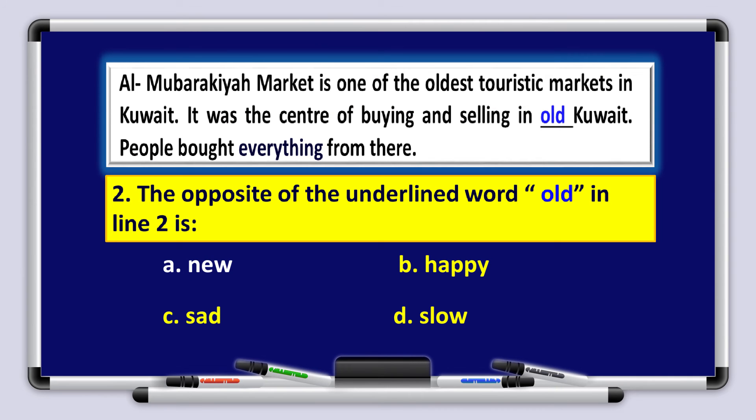Question number two. The opposite of the underlined word old in line two is what? A, new. B, happy. C, sad. D, slow. Try to read the paragraph above and find the opposite of the word old. Al Mubarakiya market is one of the oldest touristic markets in Kuwait. It was the center of buying and selling in old Kuwait. So, what's the opposite of old? Of course, you would know it. It's new.